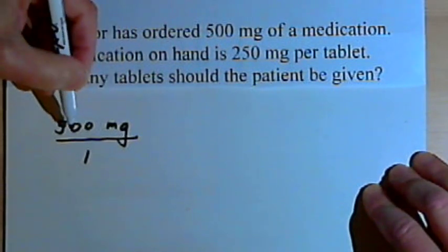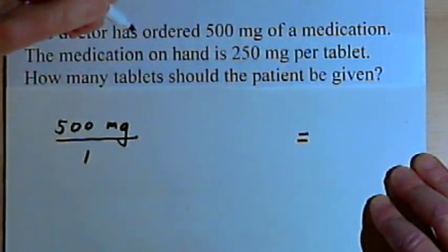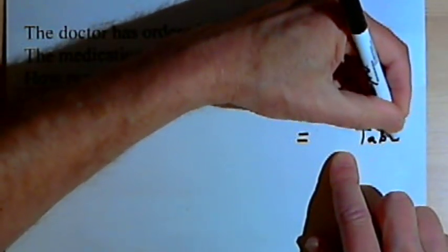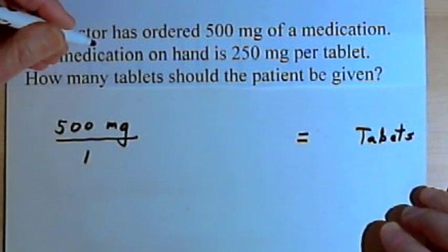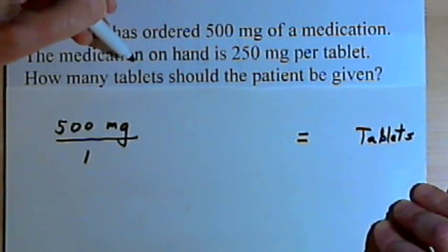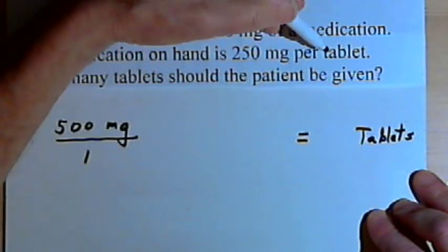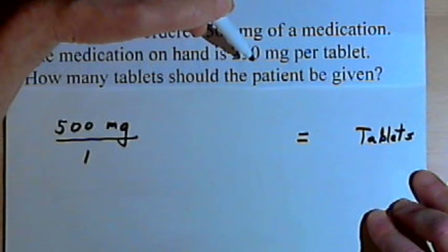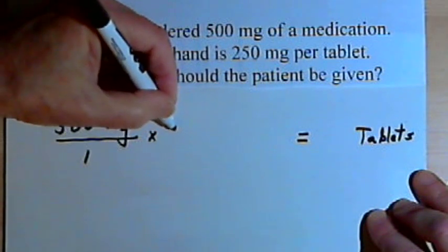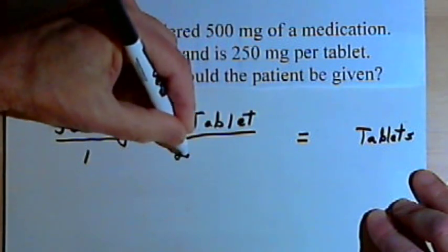I want to turn that amount of medication, 500 milligrams, into some number of tablets. So I'm going to put an equal sign, leave a place for the number of tablets, and write the unit tablets that I want to end up with. The other information given is that there are 250 milligrams per tablet, meaning one tablet equals 250 milligrams. So I'm going to write a fraction: one tablet over 250 milligrams.